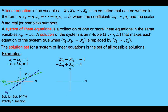The next example has two linear equations and two unknowns. The first equation is 2x sub 1 minus 3x sub 2 equals negative 1, and the second equation is negative 2x sub 1 plus 3x sub 2 equals negative 4. If we graph these, the first equation is one line and the second equation is another line, and we can see that these lines are parallel.